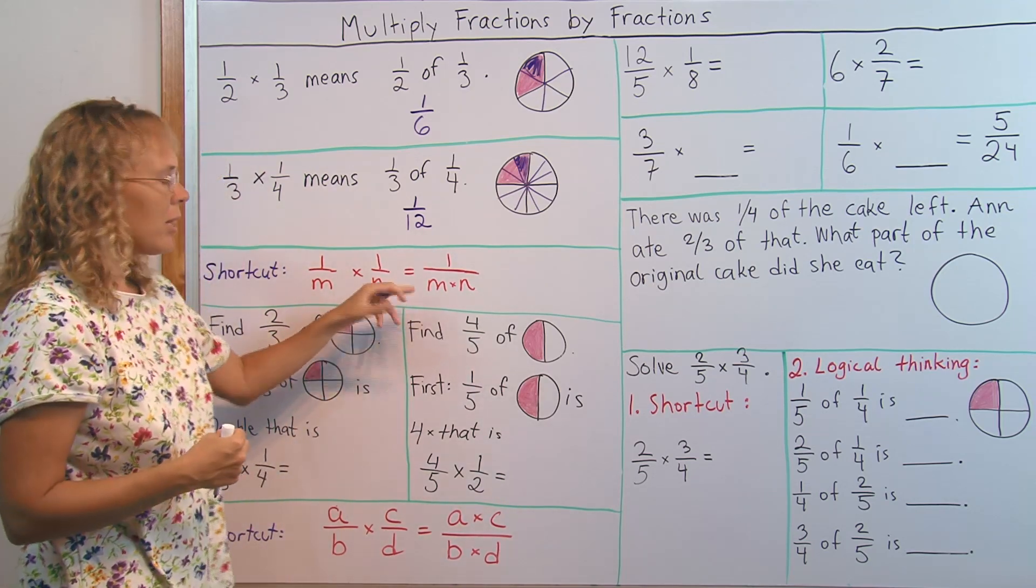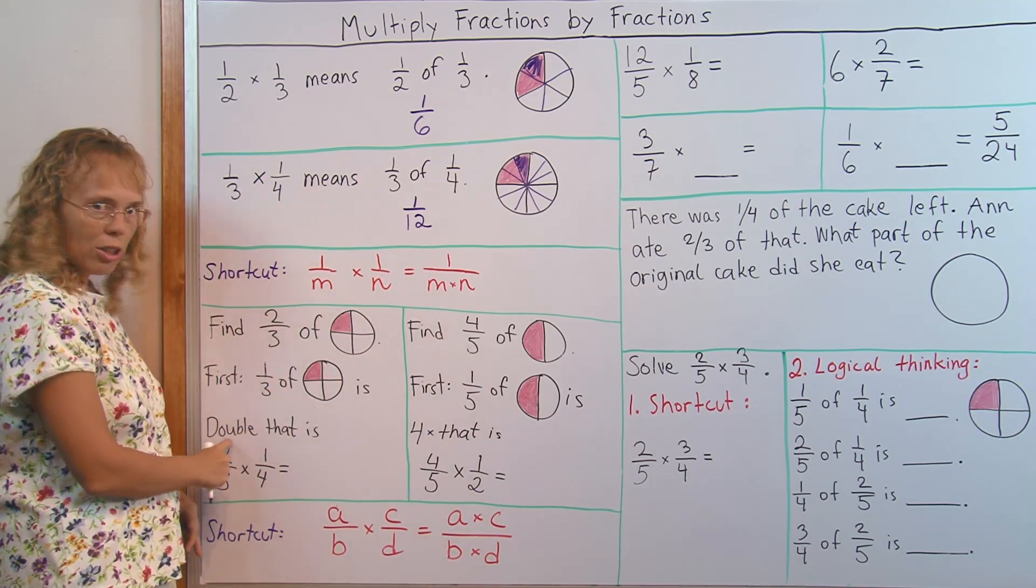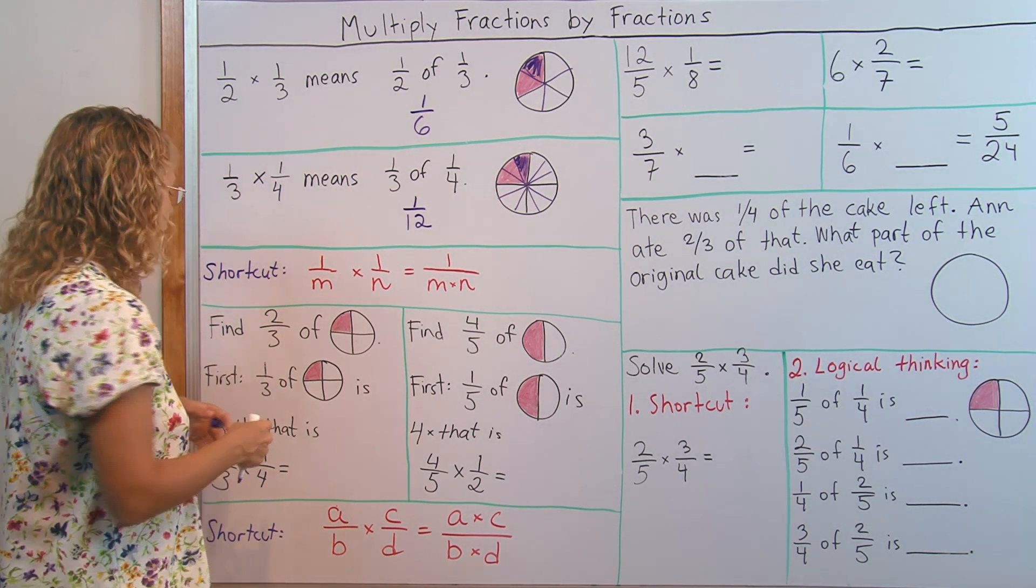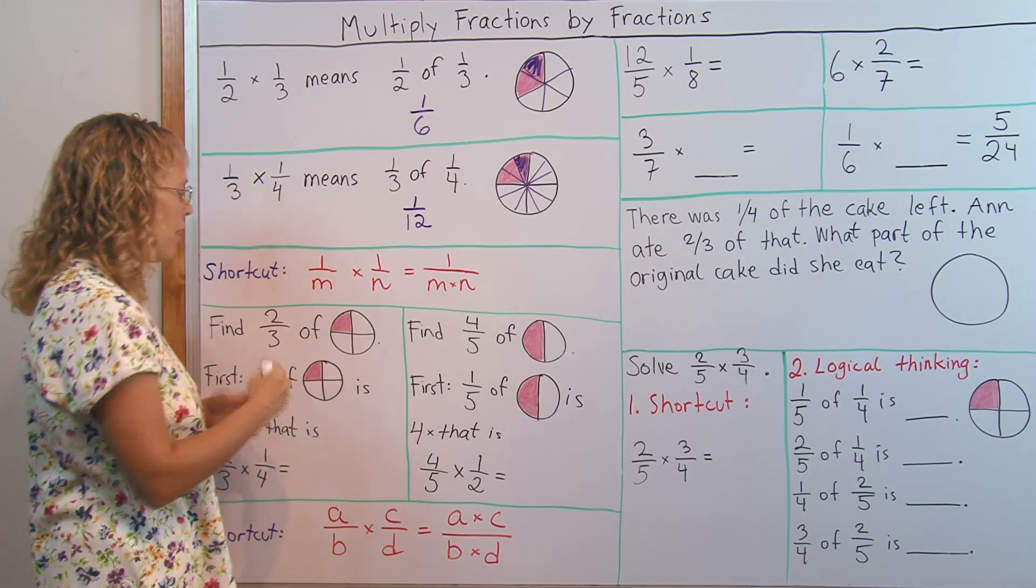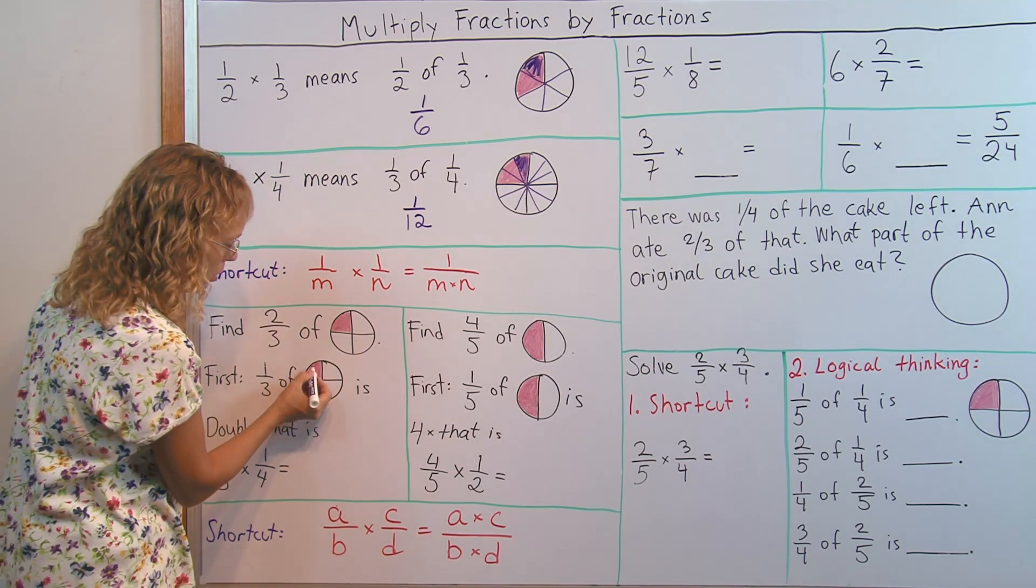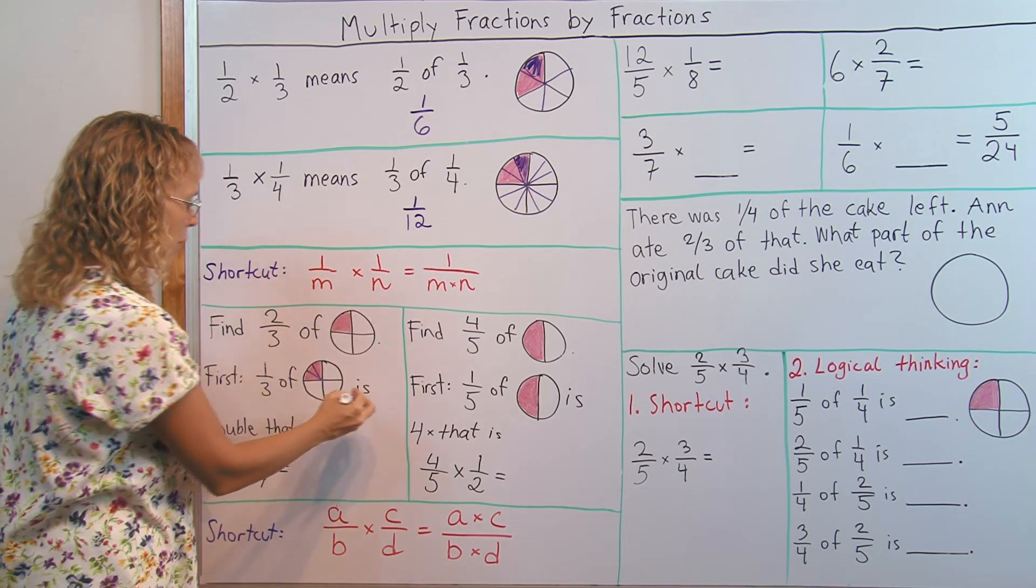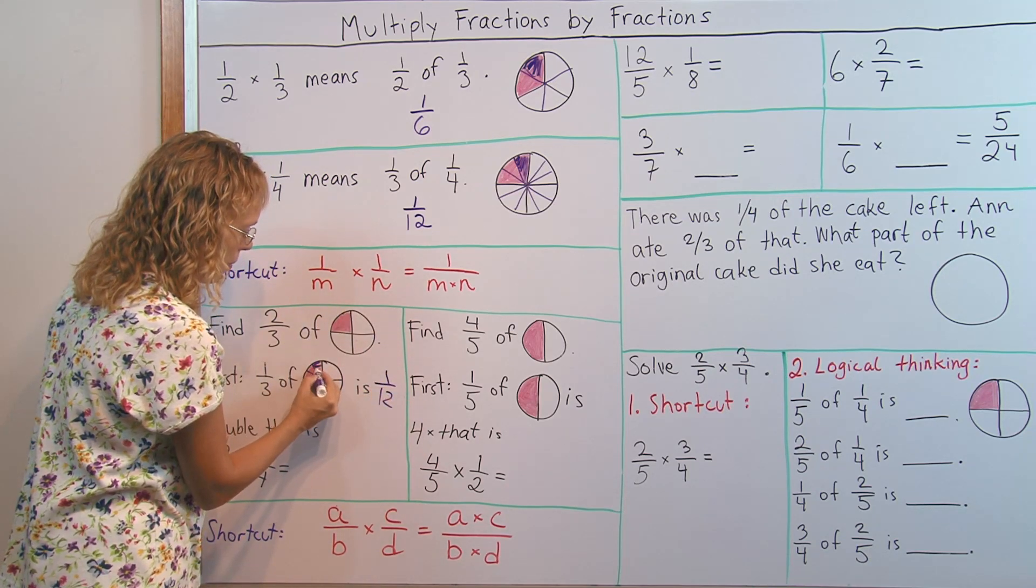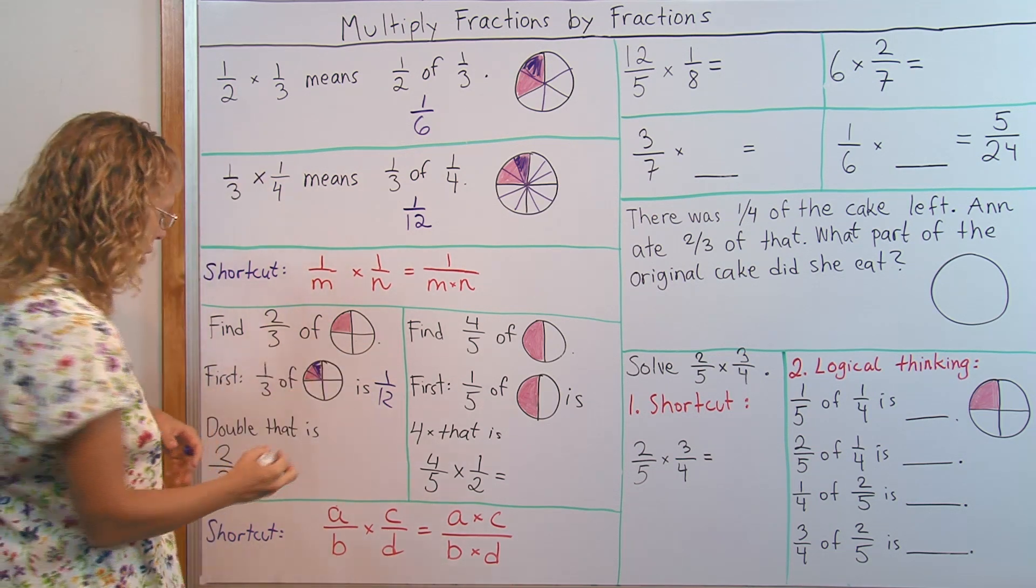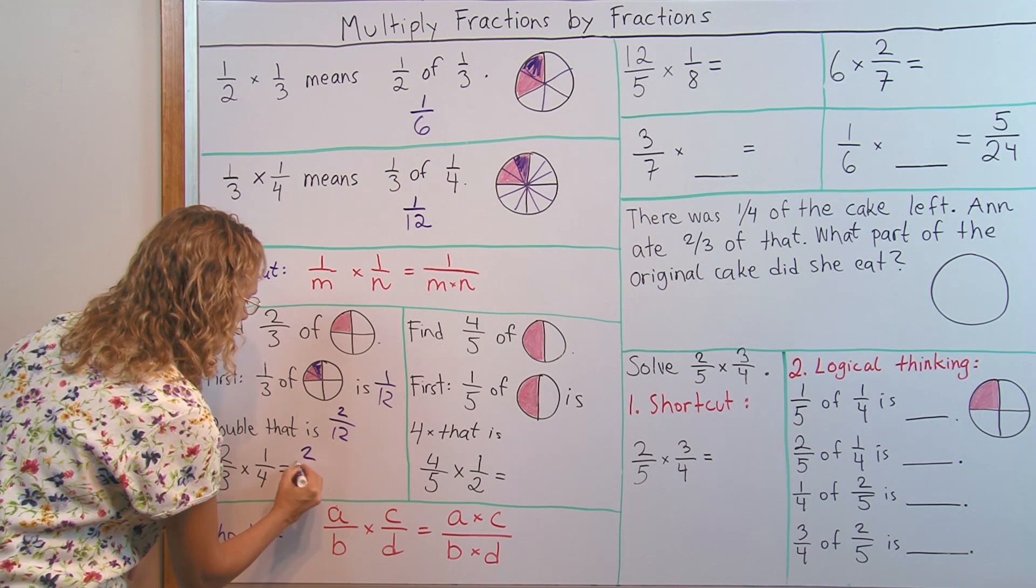From this one, we then go on to fractions where the numerator is not one. For example, two thirds times one fourth. We will think of it this way: Find two thirds of one fourth. I'll first find one third of it. One third of one fourth, we already know how to solve it using the shortcut even, it's gonna be one twelfth. This piece here. And so two thirds of this piece will be double as much. It will be two twelfths, these two pieces here.